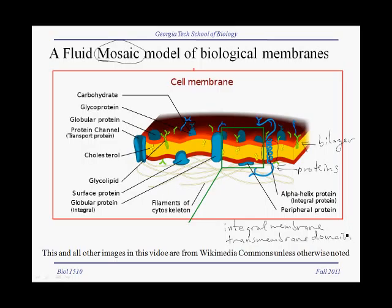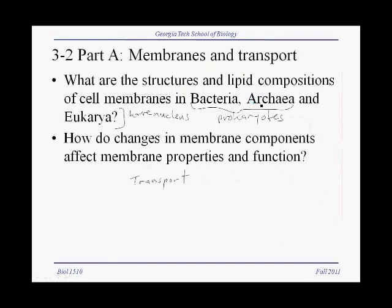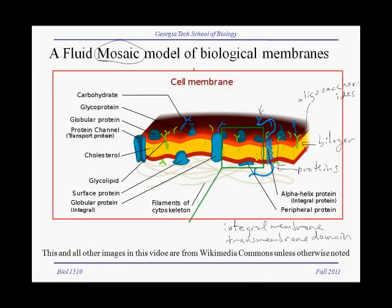In addition to proteins embedded in the lipid bilayer, we find a number of carbohydrates — essentially oligosaccharides. These may be covalently linked to lipids themselves, or proteins can also have oligosaccharides attached to them. Proteins containing oligosaccharides are called glycoproteins.